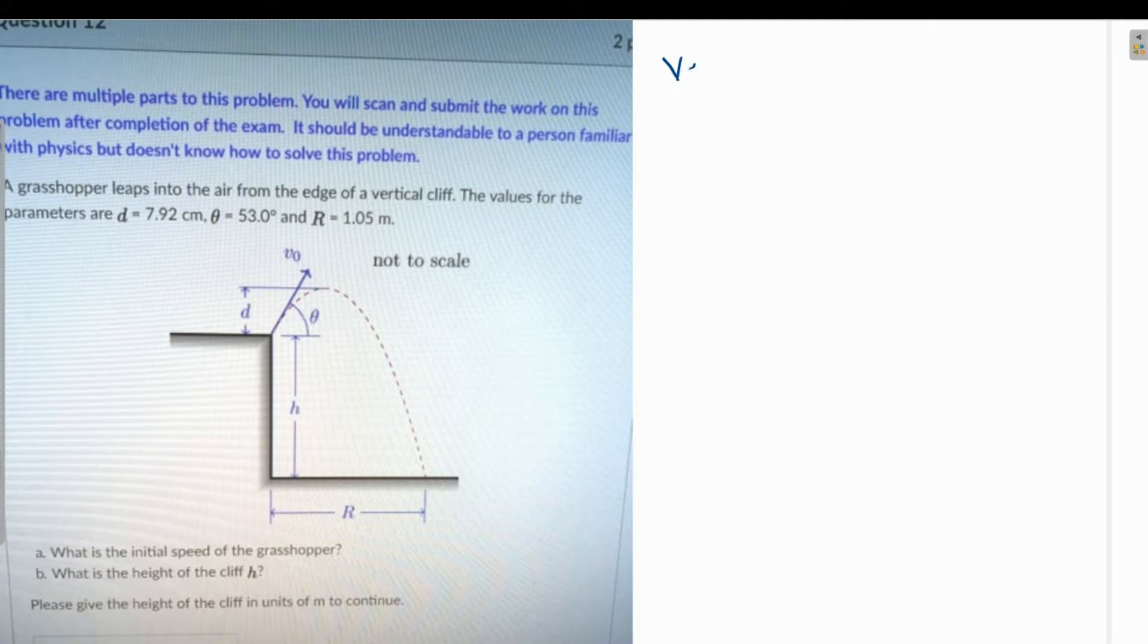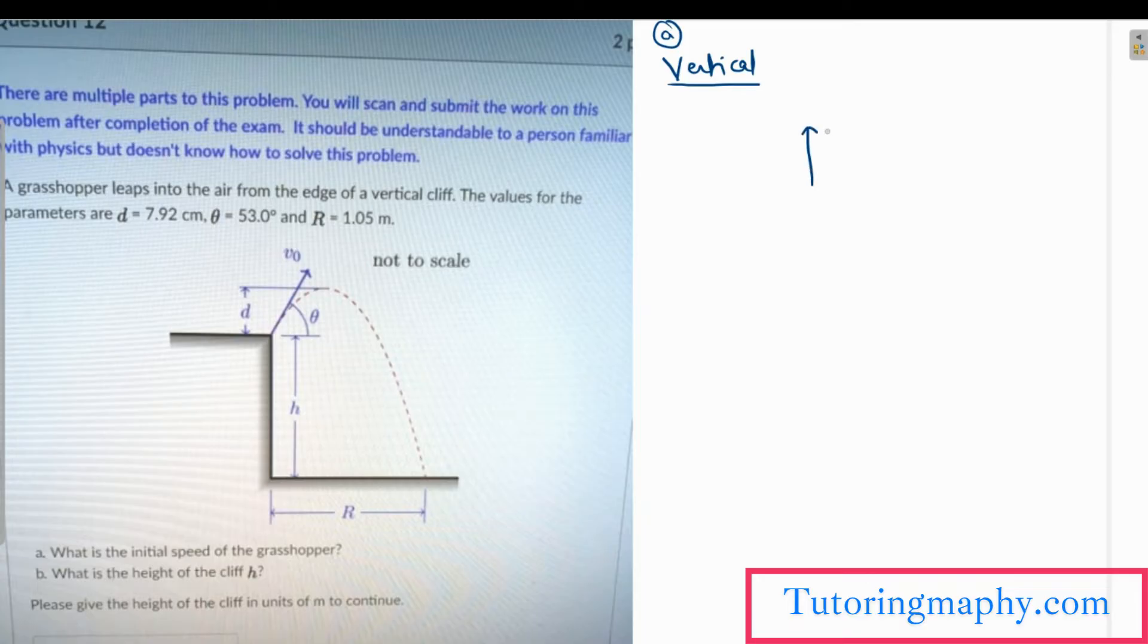We are going to analyze the vertical motion for part a. For vertical motion, we know that the vertical speed component is v naught sine of theta. This is the initial speed, and finally at the topmost point the vertical velocity becomes zero. There is a horizontal velocity which will always be there, but the vertical velocity v vertical becomes zero.